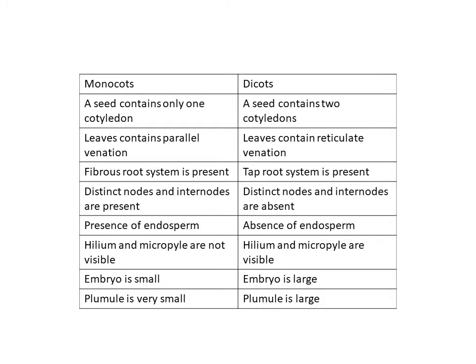Hilum and micropyle are not visible in monocots. The hilum is a scar on the seed that shows the location at which the ovule and the ovary wall were attached to each other. The micropyle is a small pore which shows the point from which the pollen tube enters the ovary during fertilization.